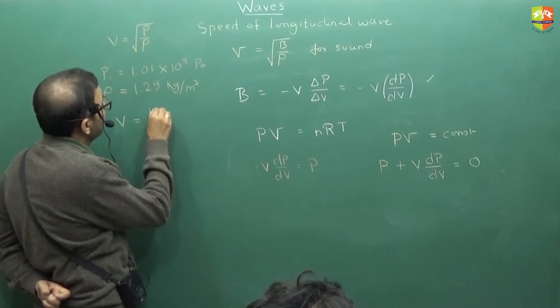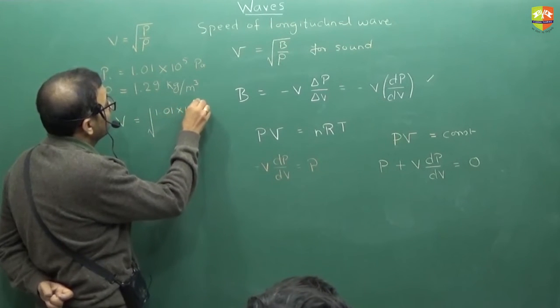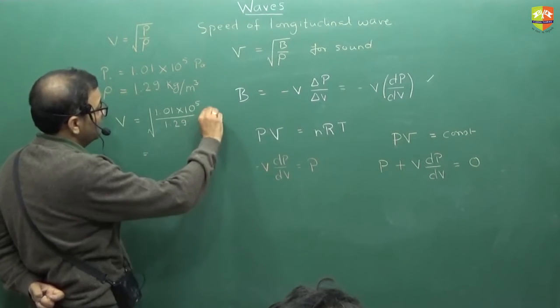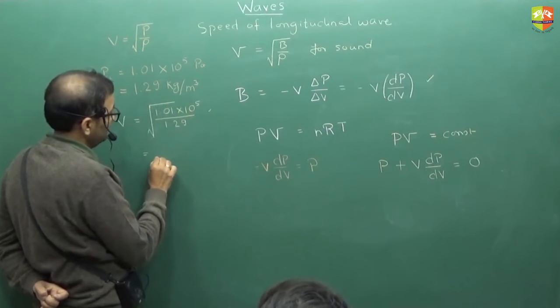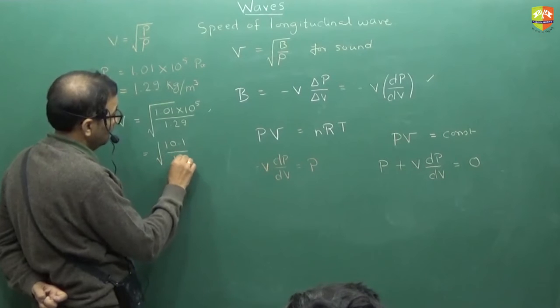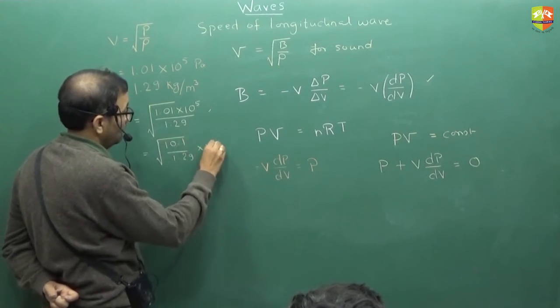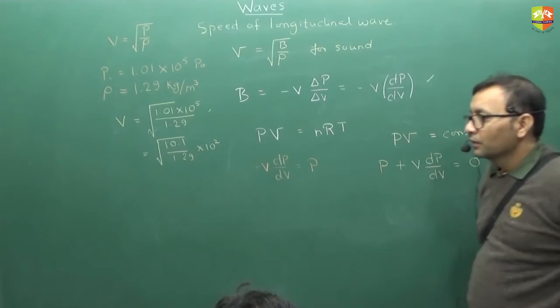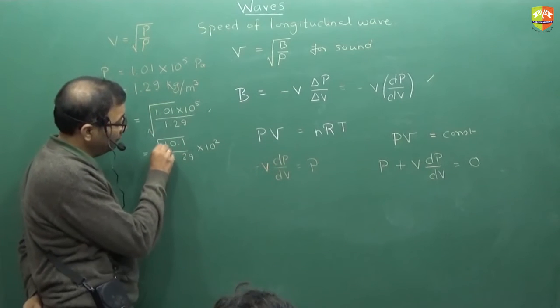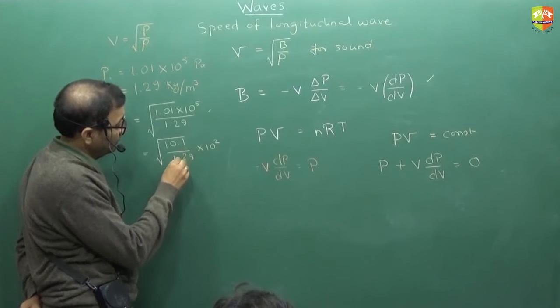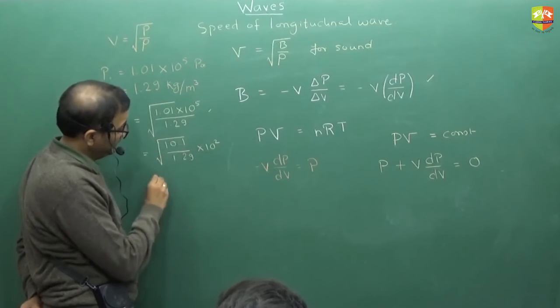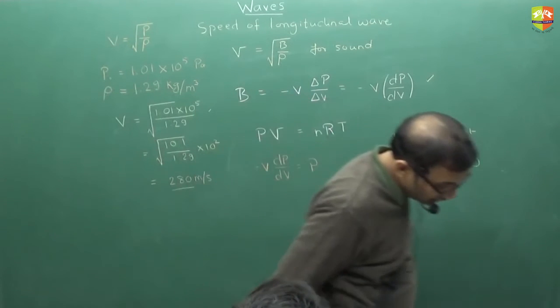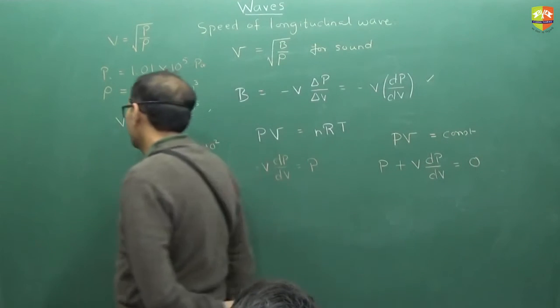So can you roughly calculate the velocity of sound? Anyone? Just a rough estimation. Calculate this. How much it is? So this is approximately 2.9, 2.8. So this is around 280 meter per second? Roughly? So the actual answer is 280. So this is the velocity of sound. But experimentally, velocity of sound is found to be 333, 320, 330 like that.